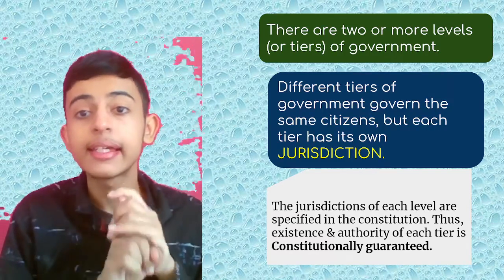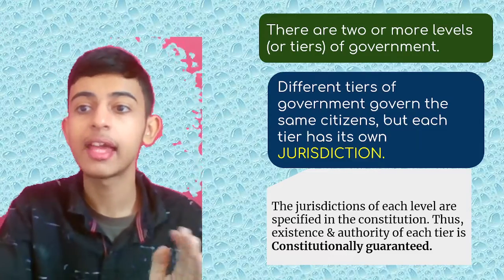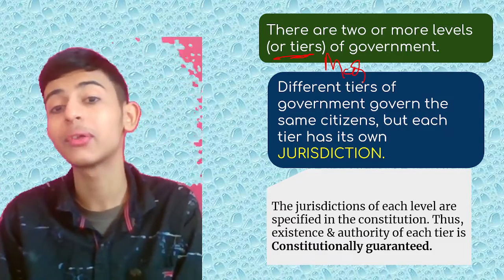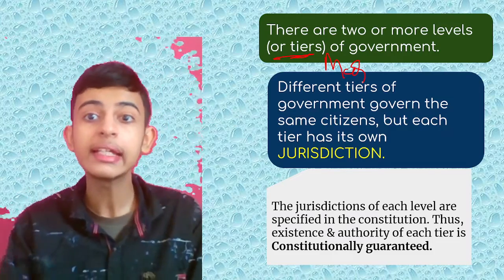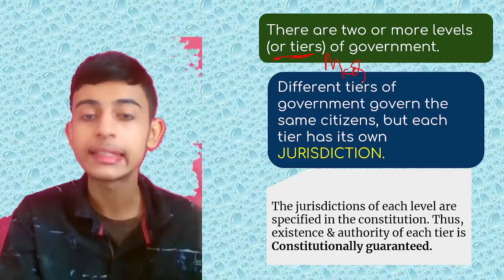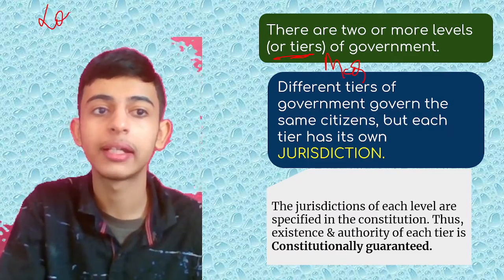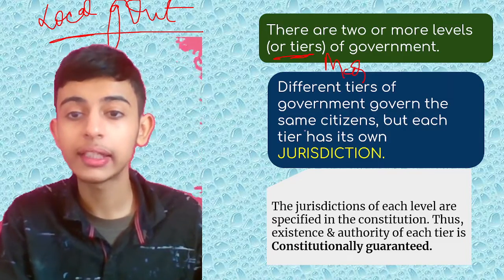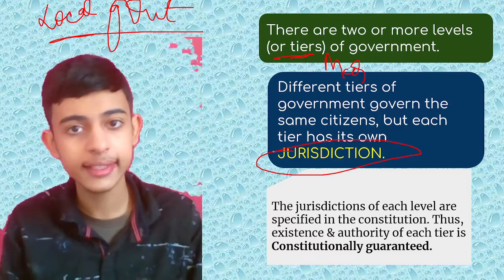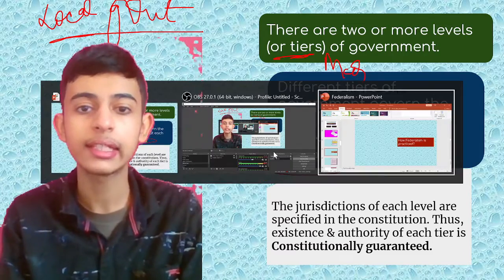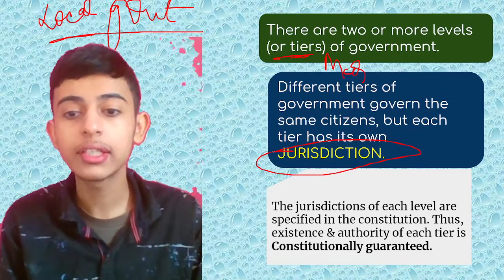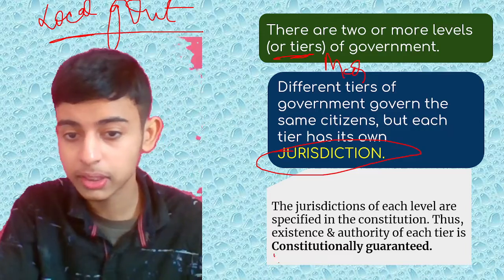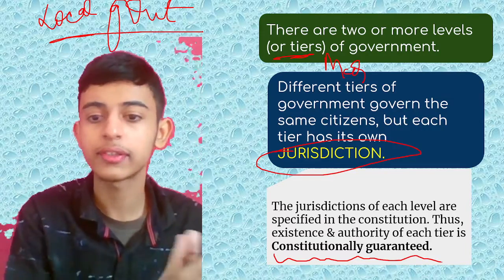The first feature of federalism is that there are two or more levels of government — levels are also known as tiers, which is an MCQ point. These are: central government, state government, and local government. Different tiers of government govern the same citizens, but each tier has its own jurisdiction. The jurisdictions of each level are specified in the constitution, meaning the existence and authority of each tier is constitutionally guaranteed.